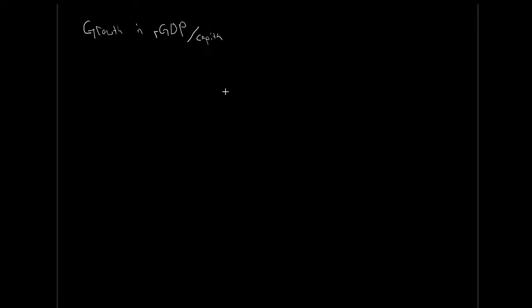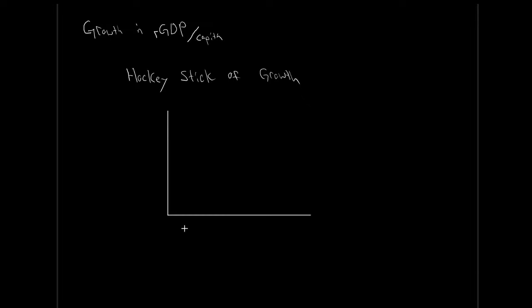The history of economic growth is known as the hockey stick of growth. Why is it called a hockey stick of growth? We can look at it like this: with real GDP per capita on the vertical axis — output per person — and time along the bottom horizontal axis.